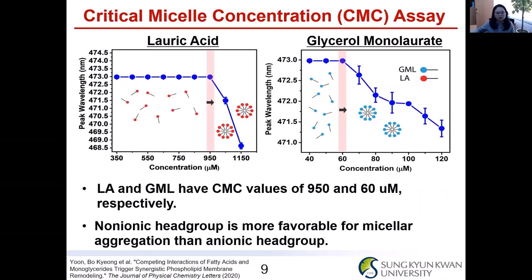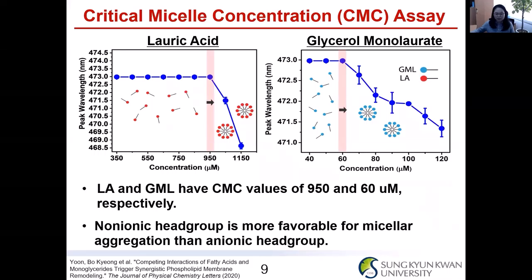First we measured the CMC of each compound. The CMC value of lauric acid is 950 micromolar, and for GML the CMC value is 60 micromolar. GML has a significantly lower CMC value because of its non-ionic head group, which is more likely to form micellar aggregation.